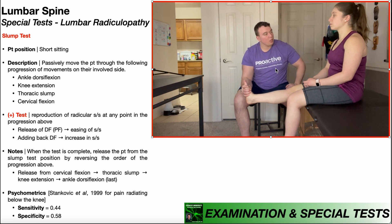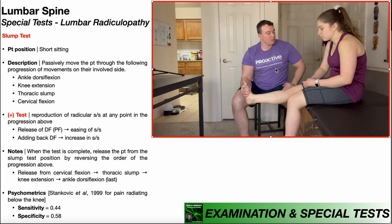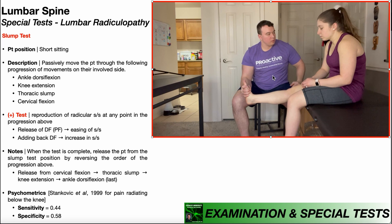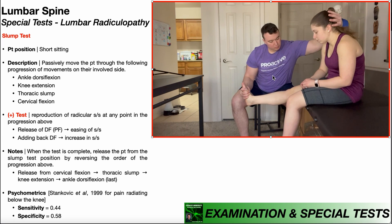If there are no symptoms after ankle dorsiflexion and knee extension, have her slump down. If symptoms appear at that point, stop. But if there are still no symptoms after the thoracic slump, you can then add the cervical flexion.